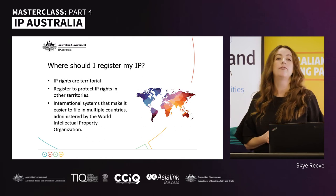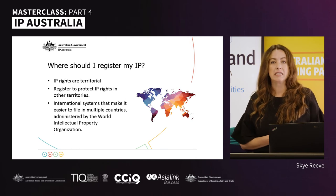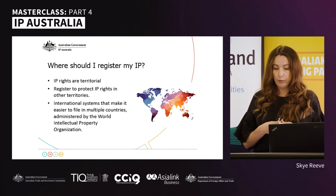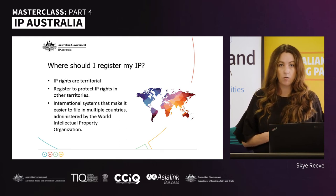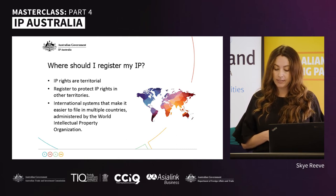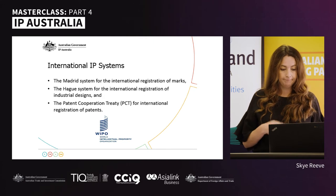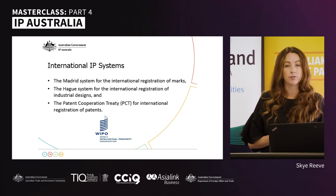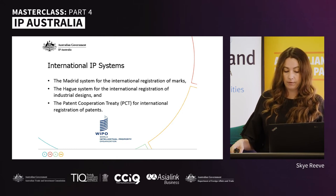When filing for an IP right in another jurisdiction you have a couple of options. You can file directly to the office in that country, or depending on the jurisdiction, you can use an international routing system. The World Intellectual Property Organization, also known as WIPO, administers several international systems designed to make it easier to file for registration in multiple countries — including the Madrid system for trademarks, the Hague system for industrial designs, and the Patent Cooperation Treaty or PCT for patents.